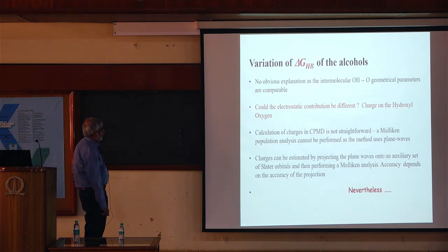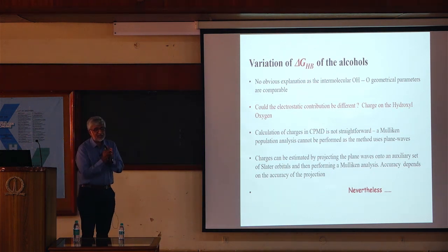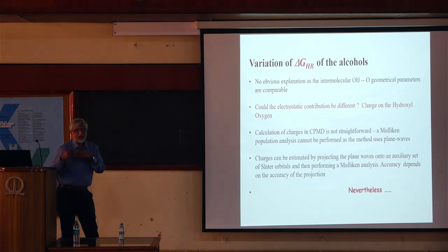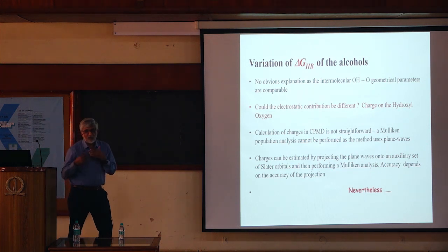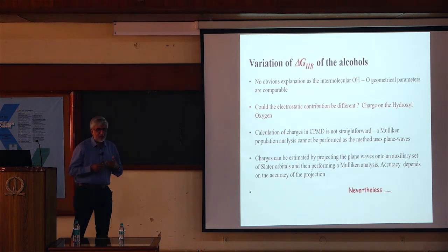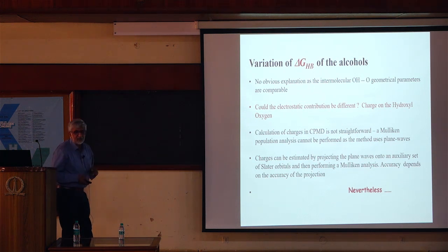If you recall, the centroid and cutoff values appeared very similar across alcohols. If you were to attribute hydrogen bonding to covalency, van der Waals, or dispersion interactions, you would expect sensitivity to geometrical parameters. But if the geometrical parameters are essentially identical, it becomes hard to explain why we observe a variation in ΔG.